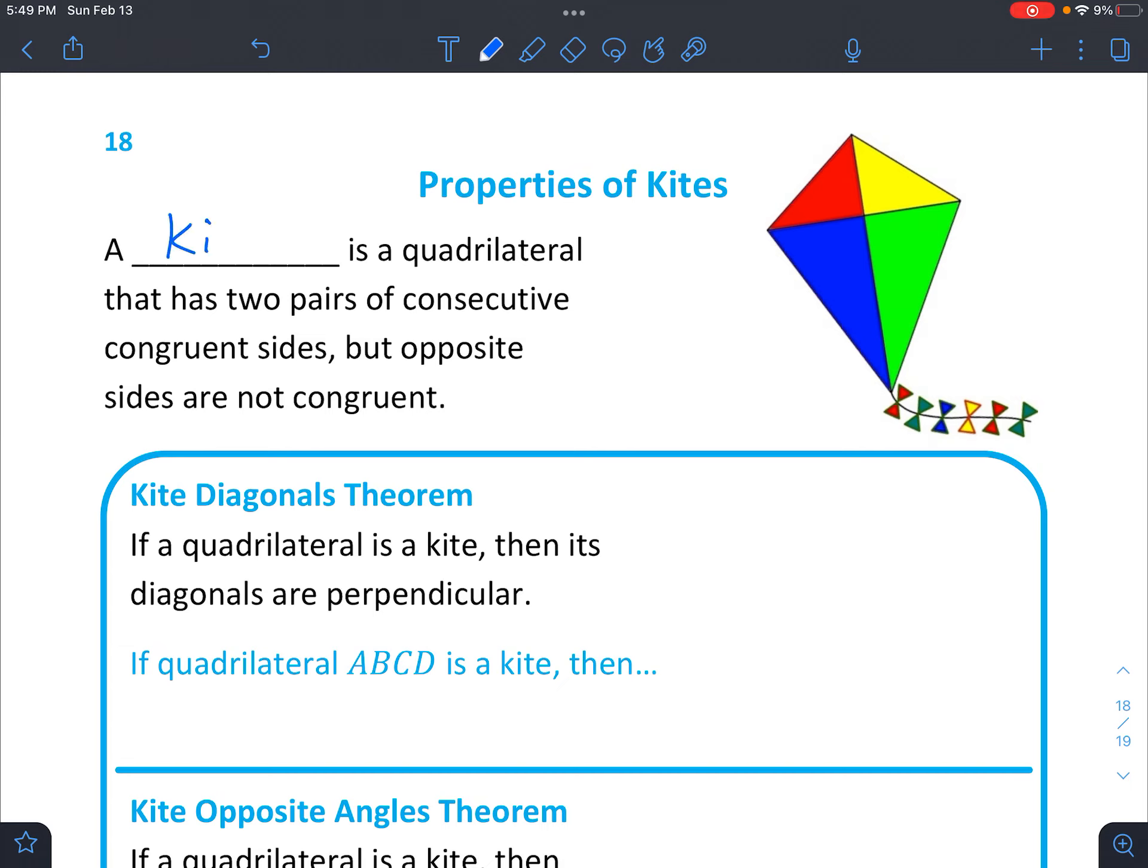You could say a kite is a quadrilateral that has two pairs of consecutive congruent sides. The opposite sides are not congruent. So that means that these two sides would equal each other, and then these two sides would equal each other.